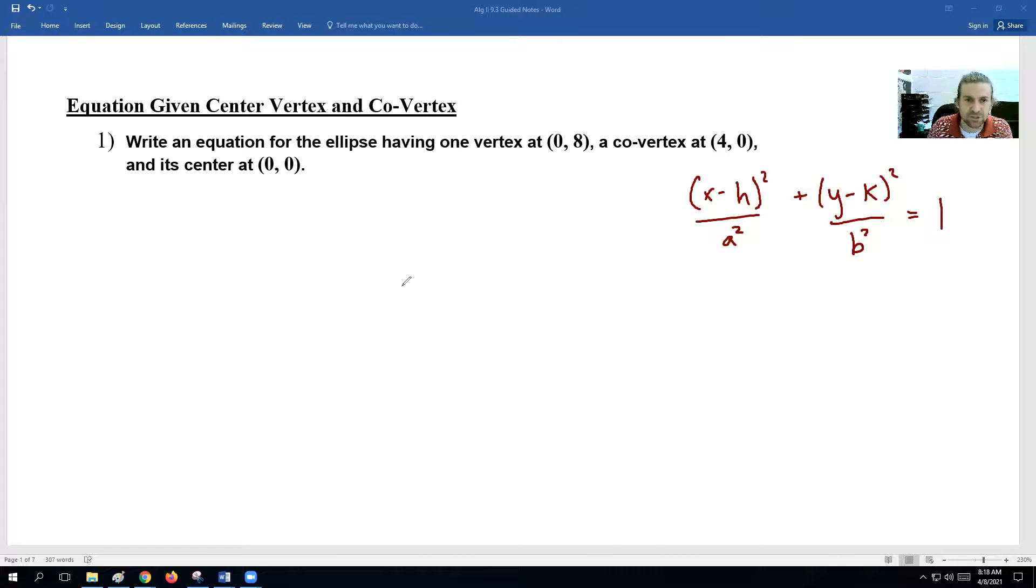So what I'd like to do is just kind of do a quick sketch of the graph, because that will actually help us figure out some other things. So if we know that the center is right at (0, 0), and the vertex is at (0, 8), so over 0, up 8, that means the other vertex has to be directly across from that. So if it's 8 units away, it's 8 units away to be at (0, -8), meaning the distance between this is 16 or 8 and 8.